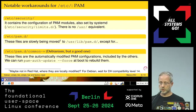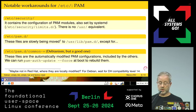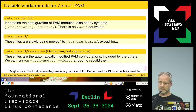The biggest culprit here is PAM. /etc/security contains all the configuration files for the PAM modules. Some of them are even created by systemd and there is no /usr equivalent, so they have to be copied from somewhere else if the system is started with an empty /etc.